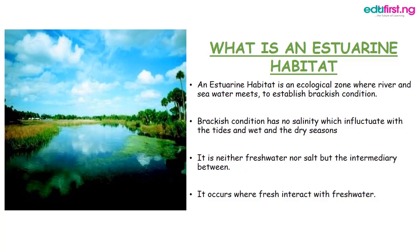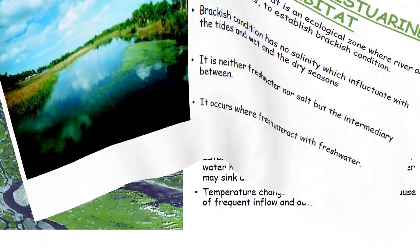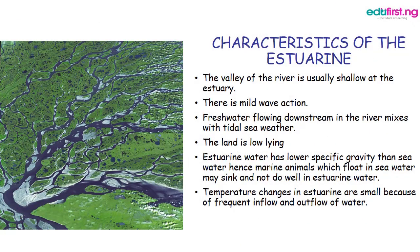An estuarine habitat is an ecological zone where river and sea water meet to establish a brackish condition. A brackish condition has variable salinity which fluctuates with the tidal action and wet and dry seasons. It is neither freshwater nor saltwater, but the intermediary between the two.